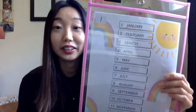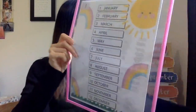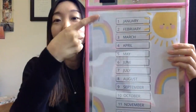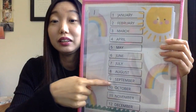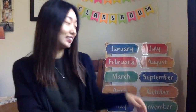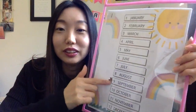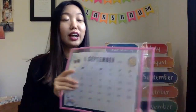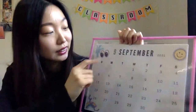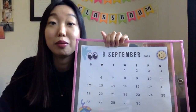Let's find September here — where's September? Can you find September? September is the ninth month. Where's number nine? Right here — nine, September! Let's put our first sticker beside September. We are in the month of September. Let's look at the actual calendar for September — number nine, September.